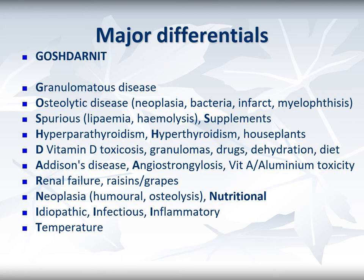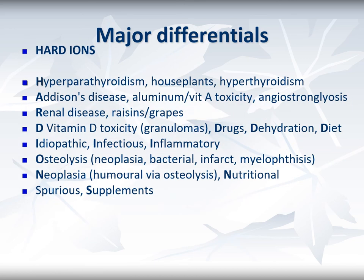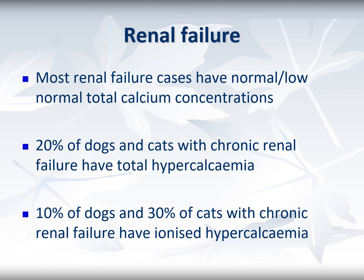There are two major mnemonics for the large array of differentials: 'GOSH DARN IT' and 'HARD IONS.' In terms of frequency, malignancy accounts for at least half of hypercalcemia cases in dogs, with kidney disease, hypoadrenocorticism, and primary hyperparathyroidism making up the majority of other cases. In cats, only about 30% of cases are neoplastic, with more cases due to renal failure and a similar number being idiopathic. For renal failure patients, most have normal or low-normal total calcium with increased organic anions complexing with calcium. About 20% of dogs and cats with chronic renal failure have total hypercalcemia, and about 10% of dogs and 30% of cats have ionized hypercalcemia.